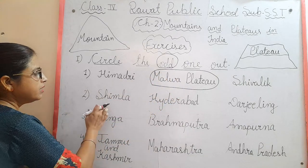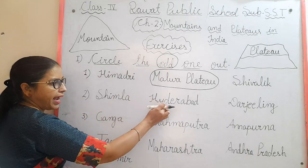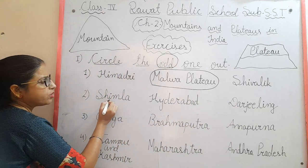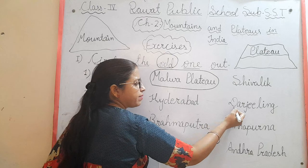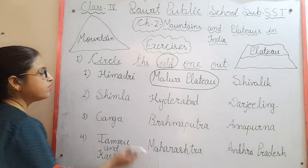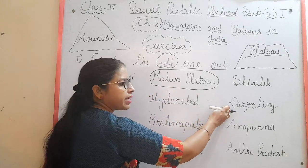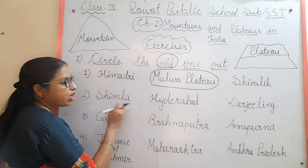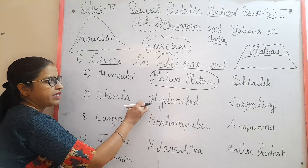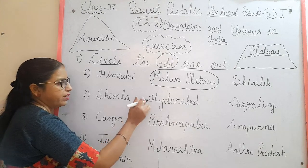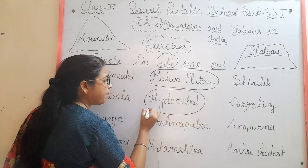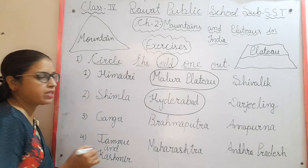Second set: Shimla, Hyderabad, and Darjeeling. Shimla and Darjeeling are both hill stations, so they are the same. The odd one is Hyderabad, because Hyderabad is not a hill station. So we will circle Hyderabad.